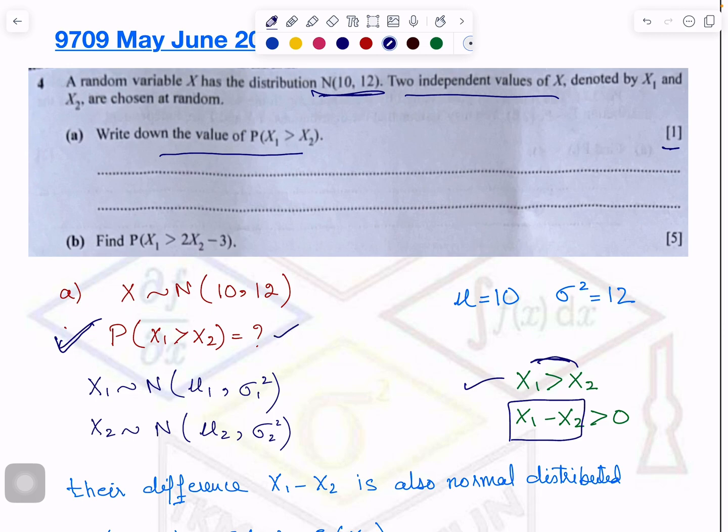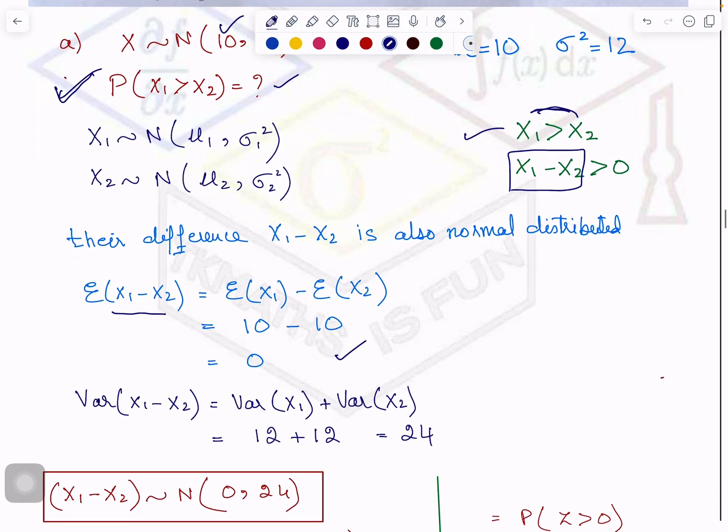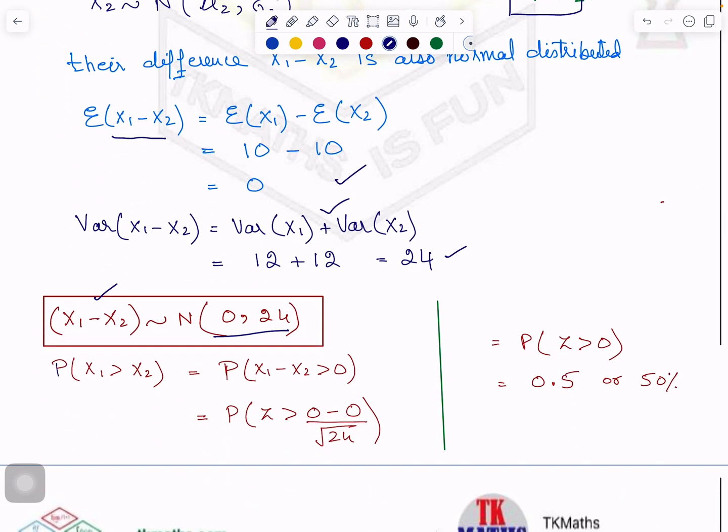So now you will find out the mean and variance of this, because whenever you have to calculate the probability in this form, you need mean and variance as it is given here. So I am calculating the mean of X1 minus X2, and you know that it is calculated like this. And variance—in variance we add up—it is 24. So your new mean and variance for X1 minus X2 is this. And when you are applying it in terms of Z, you get Z greater than 0, which is 50 percent.